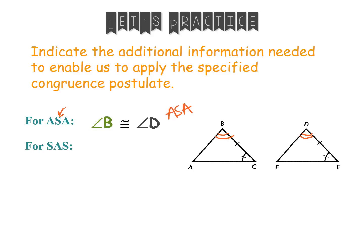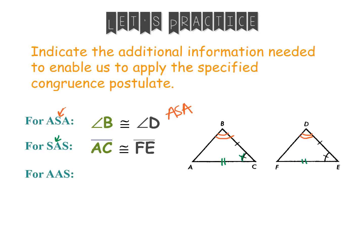Now if we're talking about SAS, the angle must be between the two sides. Here we have a side and an angle, so the only two sides that include that angle would be BC and AC. In order to use SAS, we would have to show that AC is congruent to FE. And lastly, for AAS, the side is going to be outside of the two angles. If I put the angle at B, the side would be between the two angles, which is not what we want. So it looks like I would have to use angles A and F for this to be outside and not include the angle already marked as congruent.